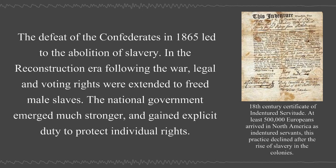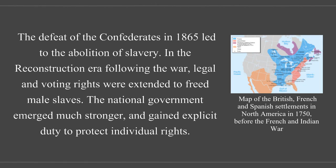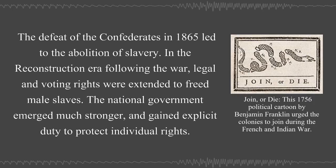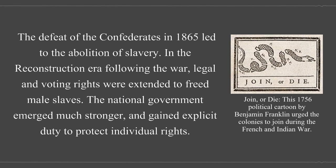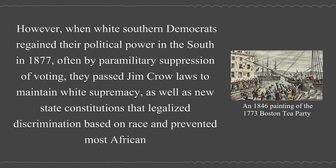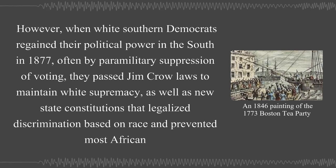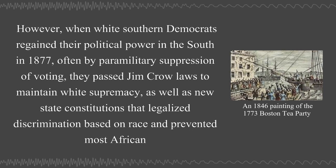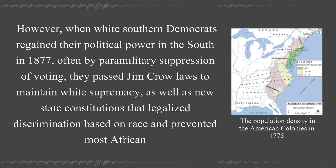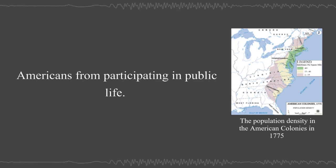The defeat of the Confederates in 1865 led to the abolition of slavery. In the Reconstruction era following the war, legal and voting rights were extended to freed male slaves. The national government emerged much stronger and gained explicit duty to protect individual rights. However, when white southern Democrats regained their political power in the south in 1877, often by paramilitary suppression of voting, they passed Jim Crow laws to maintain white supremacy, as well as new state constitutions that legalized discrimination based on race and prevented most African Americans from participating in public life.